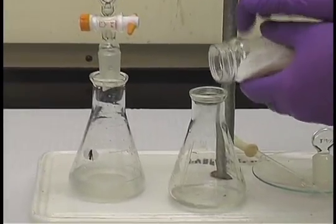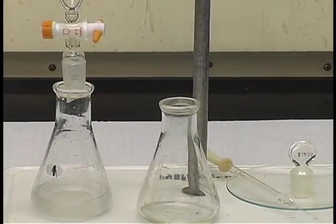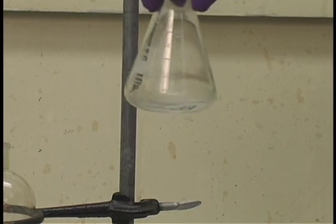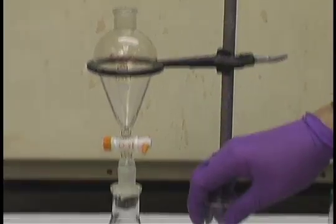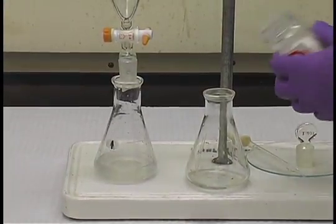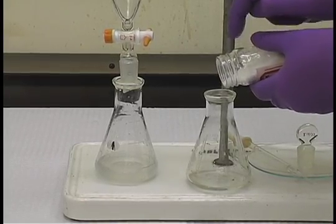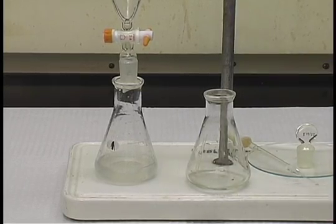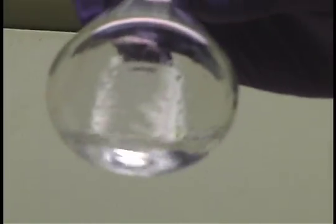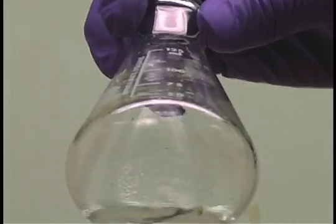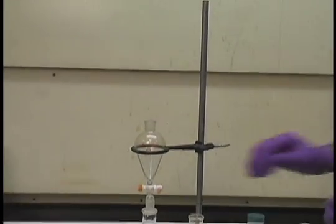Simply put a few granules of the anhydrous sodium sulfate into the flask and then swirl. Do this for about a minute and repeat the process until you see free granules floating. At this point, all the granules are still stuck to the bottom of the flask, so just add a few more. And then swirl. There are a few granules floating free in the bottom, and so that means that the liquid is sufficiently dry. Allow that liquid to stand for one minute.